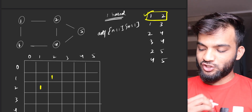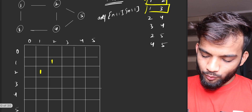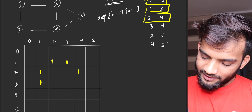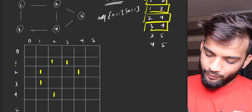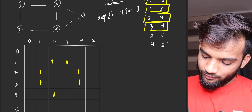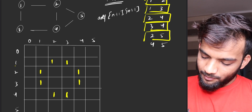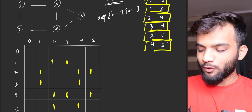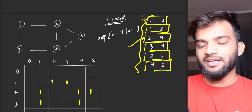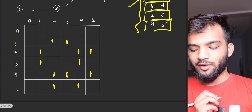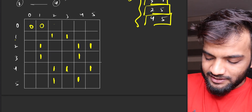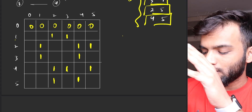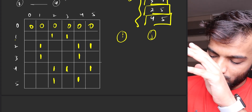Continuing to fill the matrix: for edge '1 3', mark [1][3] and [3][1] as 1. For '2 4', mark [2][4] and [4][2] as 1. For '3 4', mark [3][4] and [4][3] as 1. For '2 5', mark [2][5] and [5][2] as 1. For '4 5', mark [4][5] and [5][4] as 1. All remaining cells are filled with zeros — zero means no edge, one means there is an edge between the i-th node and j-th node.